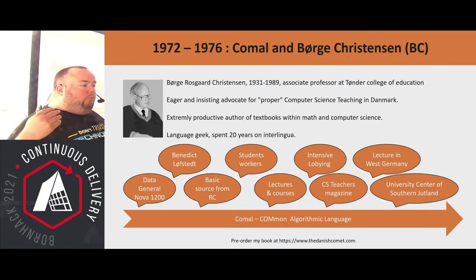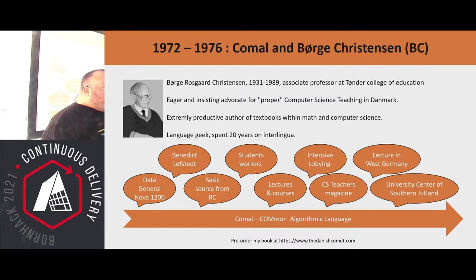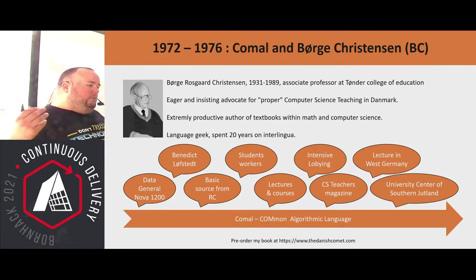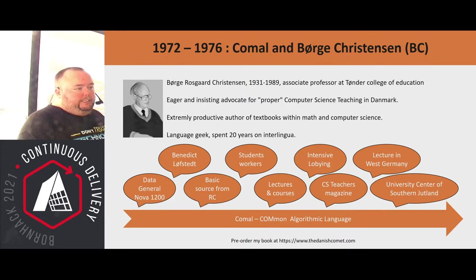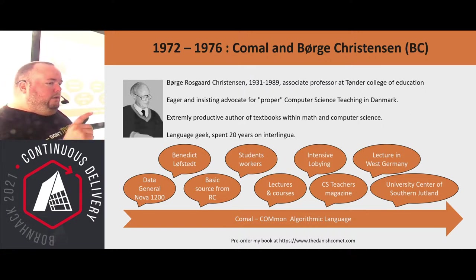Bo Christensen was very talkative and energetic, and I'm sure he just overwhelmed Regnecentralen with good intentions and questions, because sometime during the first half of 1972 they actually gave him the source code for the BASIC they used on their systems. He hired some student workers to change this BASIC into COMAL. One of the main differences is that in COMAL, GOTO is essentially prohibited — you have proper function calls and procedure calls. They turned old BASIC into a more structured language, first calling it RC BASIC, then renaming it COMAL — short for Common Algorithmic Language.